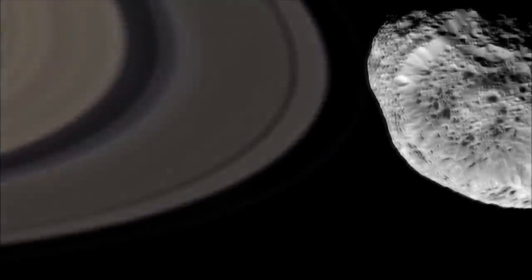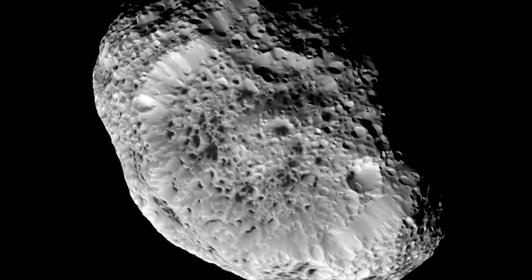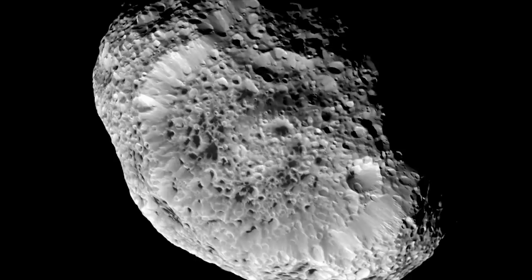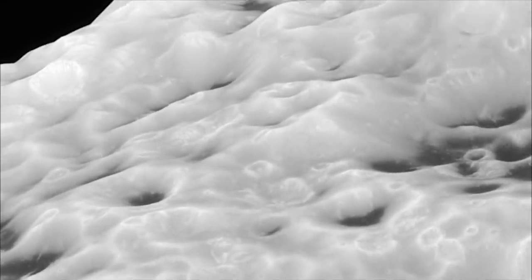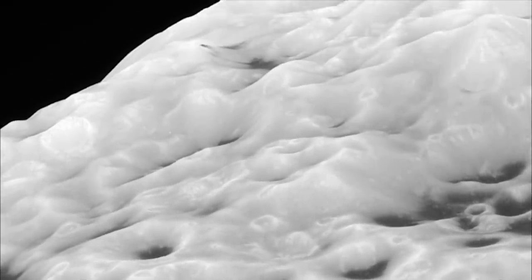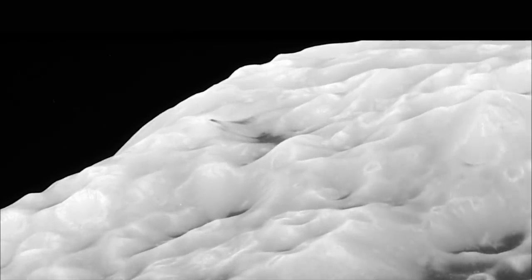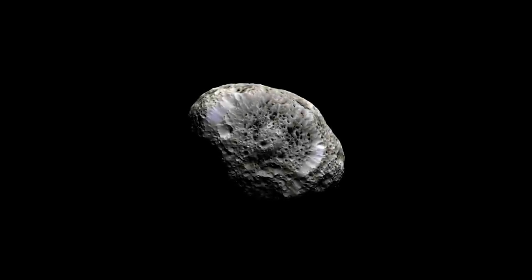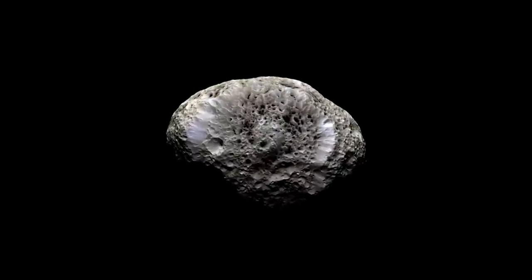Moving even closer toward Saturn, we find Hyperion, a misshapen object with a strange honeycombed surface. Hyperion is so irregular in shape and appearance, it is probably just a fragment from a larger moon that was destroyed in a collision. It may not even be solid, but a loosely packed pile of rubble. Measurements by Cassini reveal Hyperion is more than 40% empty space.